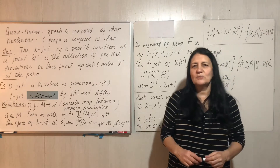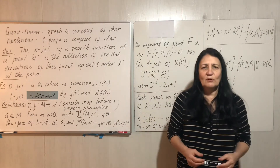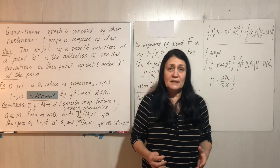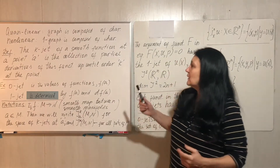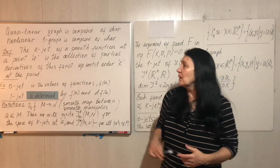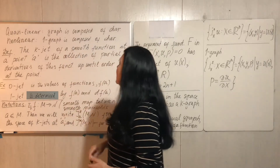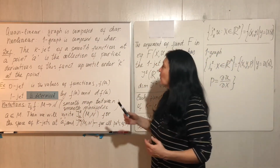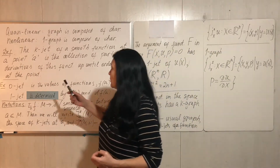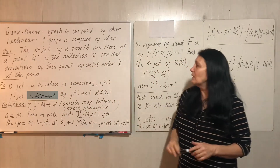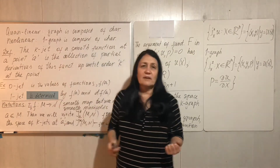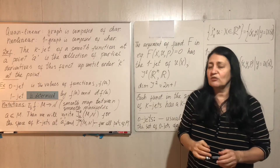We now know how to write a system of ODEs related to our first-order PDE — this system is called the characteristic system. For quasi-linear equations, the graph of our solution was composed of characteristics. For the general nonlinear equation, the same holds for the 1-graph, which will be composed of characteristics.